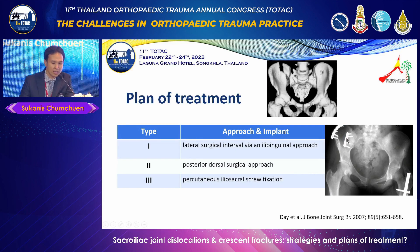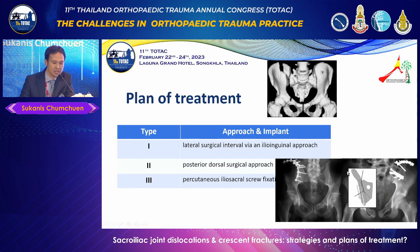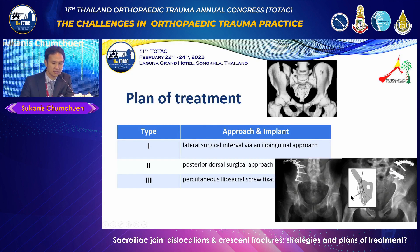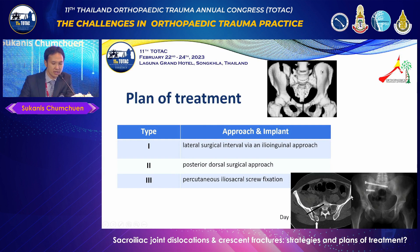For example from that paper: in type 1, they put the plate on the ilioinguinal surface. In type 2, they put the plate posteriorly and added screws across the ilium to increase stability. For type 3, they put the SI screw as usual.